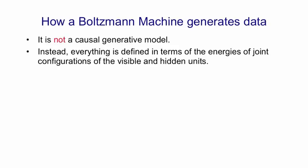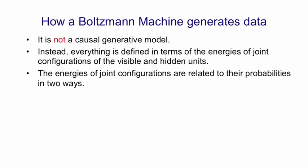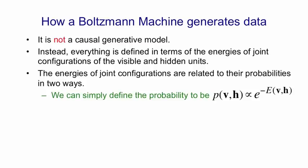Instead, everything's defined in terms of the energies of joint configurations of visible and hidden units. There's two ways of relating the energy of a joint configuration to its probability. You can simply define the probability to be proportional to e to the negative energy of that joint configuration.